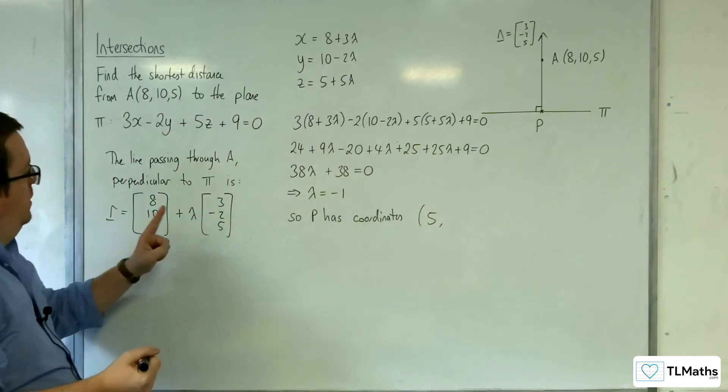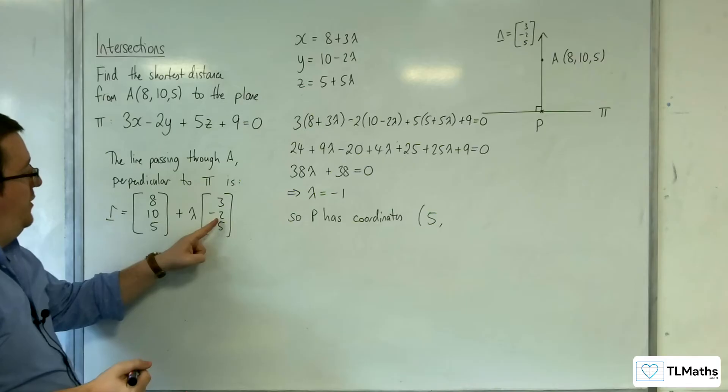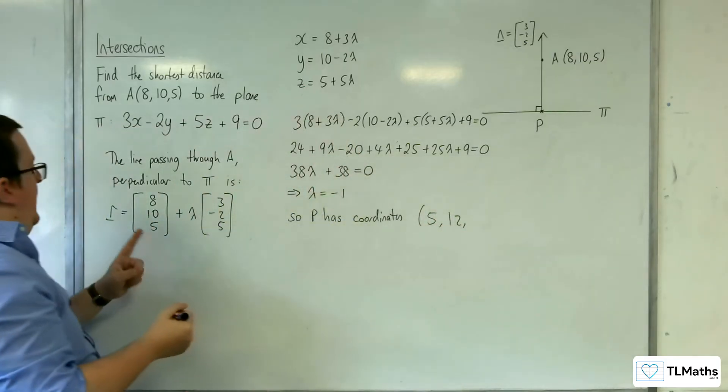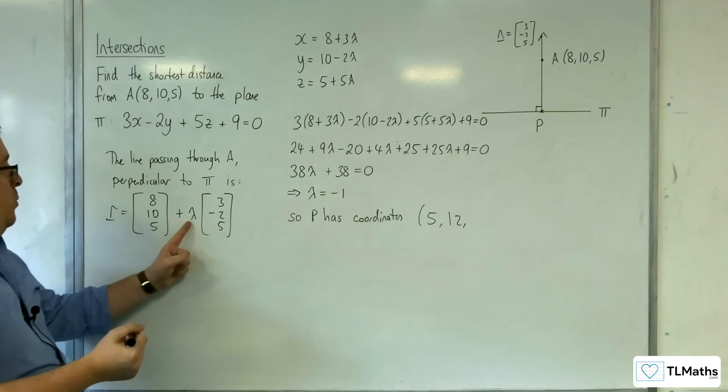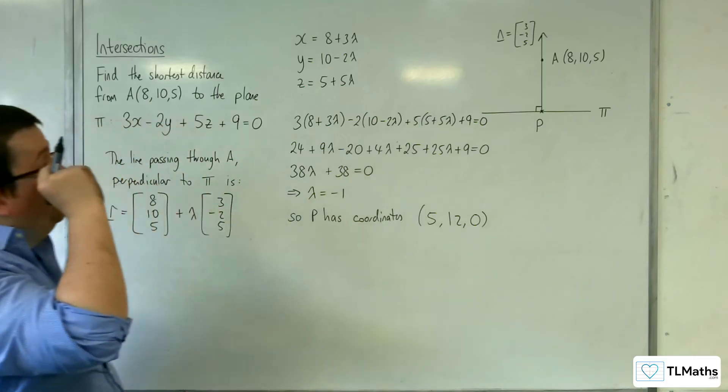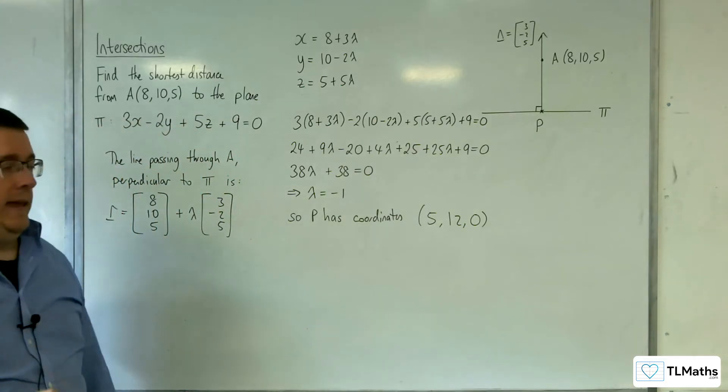10 + (-1)(-2), so 10 + 2 is 12, and 5 - 5, which is 0. So (5, 12, 0) is the point P.